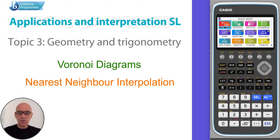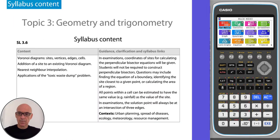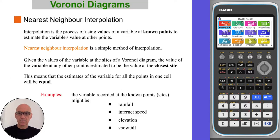Hello, in this video I'm going to talk about Voronoi diagrams, specifically about nearest neighbour interpolation, as shown here in the syllabus. Interpolation is the process of using values of a variable at known points to estimate the variable's value at other points. Nearest neighbour interpolation is a simple method of interpolation.